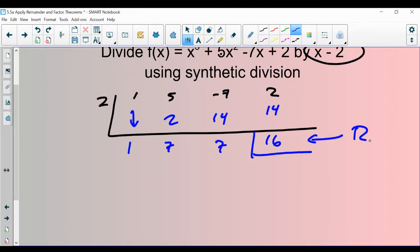This one is your remainder. This one gets no x, this one gets an x, this one gets an x squared. So your answer would be x squared plus 7x plus 7 plus 16 over x minus 2.